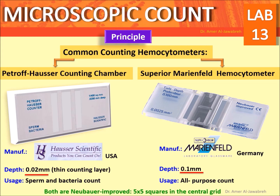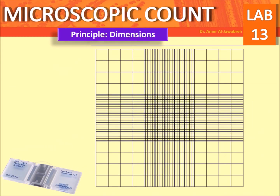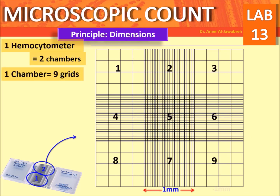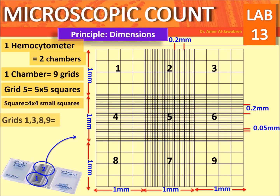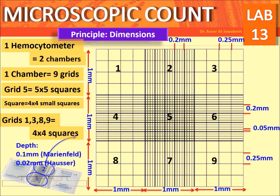Each hemocytometer consists of 2 chambers. Each chamber consists of 9 grids arranged in a 5×5 square pattern in the central grid. Each grid has dimensions of 1×1 mm, making the total chamber dimensions 3×3 mm. Grid 5 consists of 25 squares with 0.2×0.2 mm dimensions, and each of those 25 squares consists of 16 smaller squares with 0.05 mm dimensions. Unlike grid 5, grids 1, 3, 8, and 9 have 16 squares.